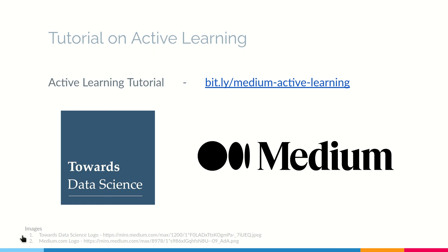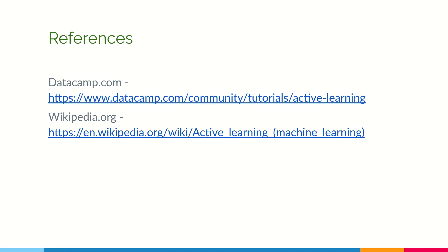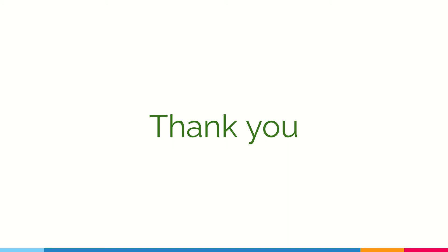I have written an article on active learning on Towards Data Science, which is part of medium.com. You can check it out and implement it for better understanding — it is an active learning tutorial in Python with explanations for each part of the code. For further reading, you can check out articles on datacamp.com and Wikipedia. All these links and my other references are in the description. Thank you, and if you like the video, hit the like button, share it with your friends, and subscribe and hit the bell icon for notifications.